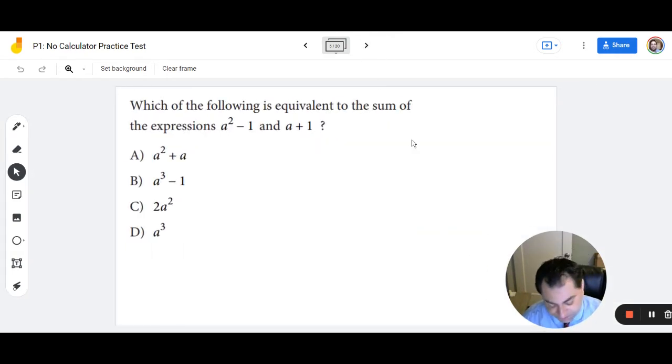Number 6. Which of the following is equivalent to the sum of the expression a squared minus 1 and a plus 1? So sum is great news because it's the easiest of the operations to perform. So we have a squared minus 1 plus a plus 1, and then a quick look at our like terms here. We have negative 1, positive 1, and we are left with a squared plus a, which is A.